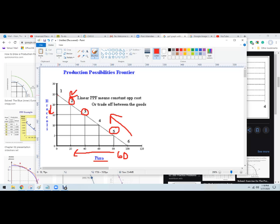Now notice this production possibility frontier. This is a straight line, which means that the units are perfectly substitutable. The inputs that we used to make pizza or broccoli didn't change.